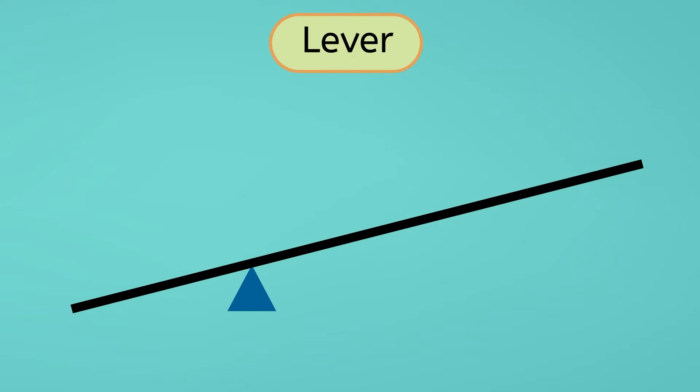A lever has two main parts, a beam and something it rests on, called a fulcrum. When you push down on one end of the beam, it pivots, or rotates, along the fulcrum, and the other end will move upward. Your push is called effort, and the side that's lifted is called the load.